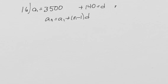And in this case, our number of months is 12 because it's a year. So A_n = 3,500 + (n - 1) × 140.